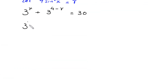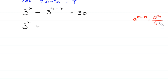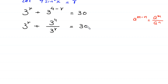Using the property a^(m-n) = a^m / a^n, the term 3^(4-r) becomes 3⁴ divided by 3^r. So we have 3^r + 81/3^r = 30. Multiplying both sides by 3^r gives 3^r squared plus 81 equals 30 times 3^r.